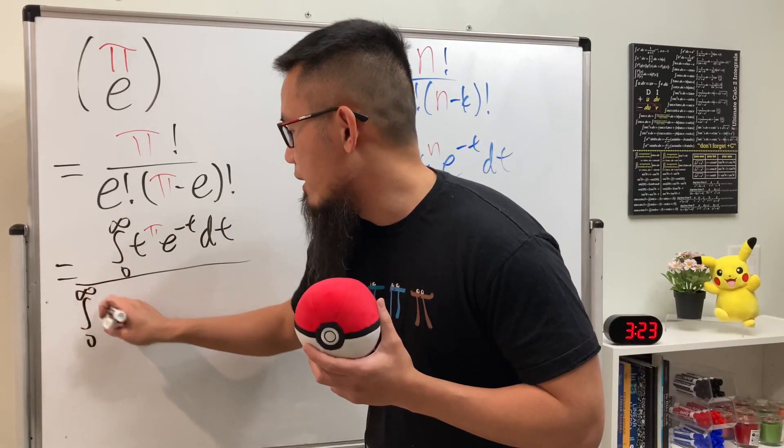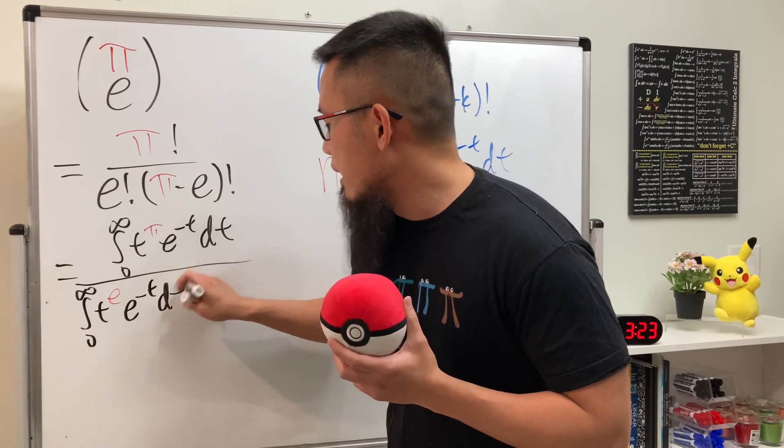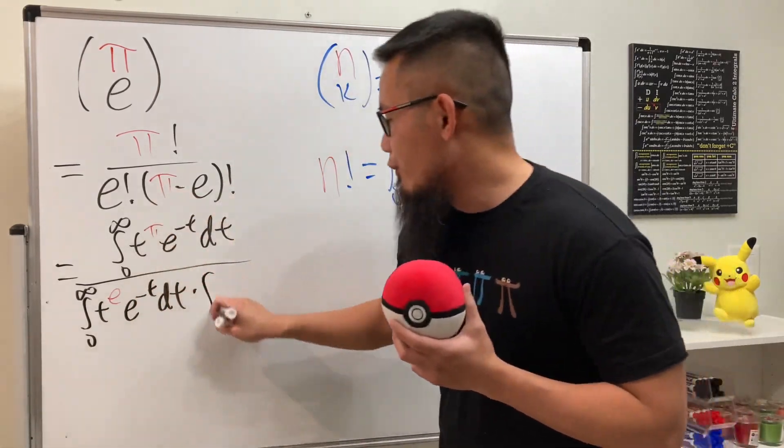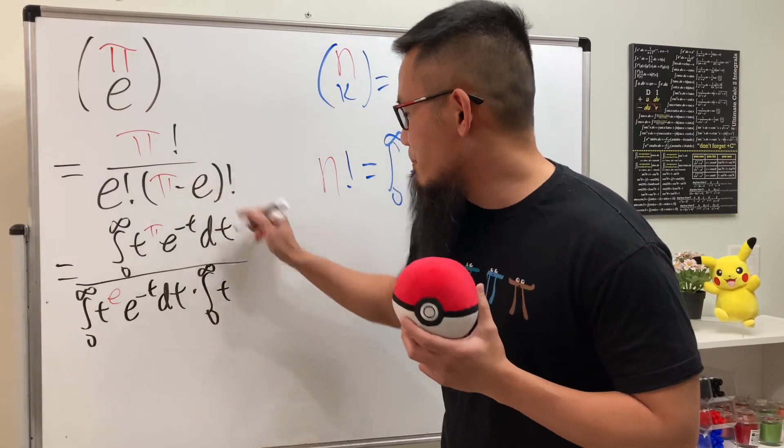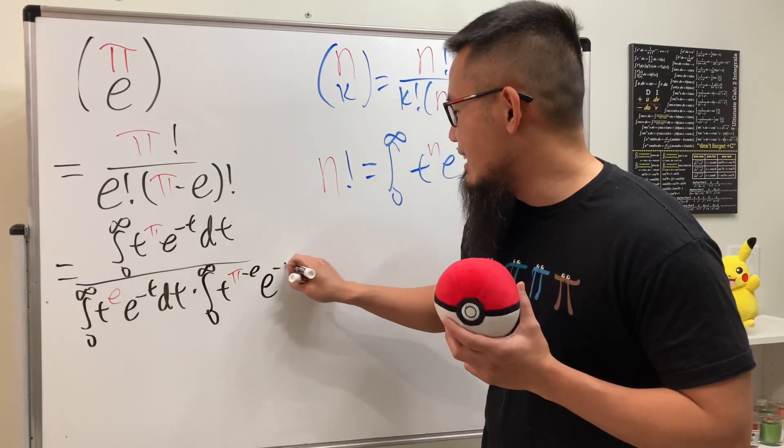The integral from 0 to infinity of t to the e power e to the negative t dt times another integral from 0 to infinity of t to the π minus e power times e to the negative t dt.